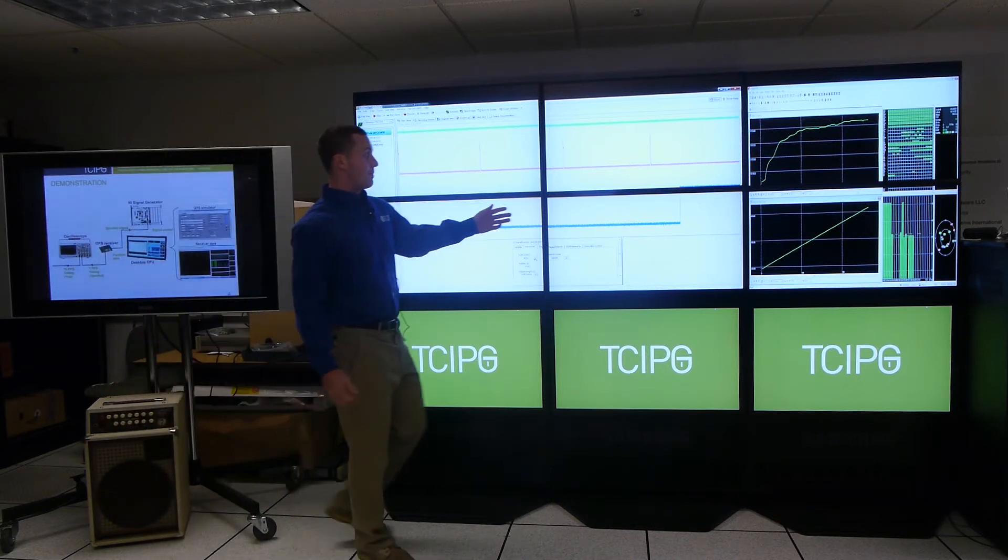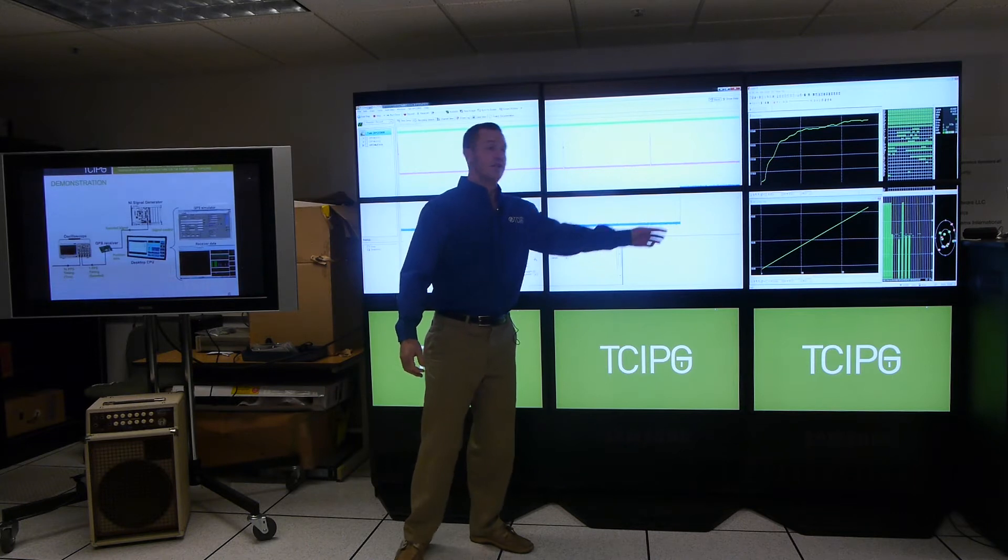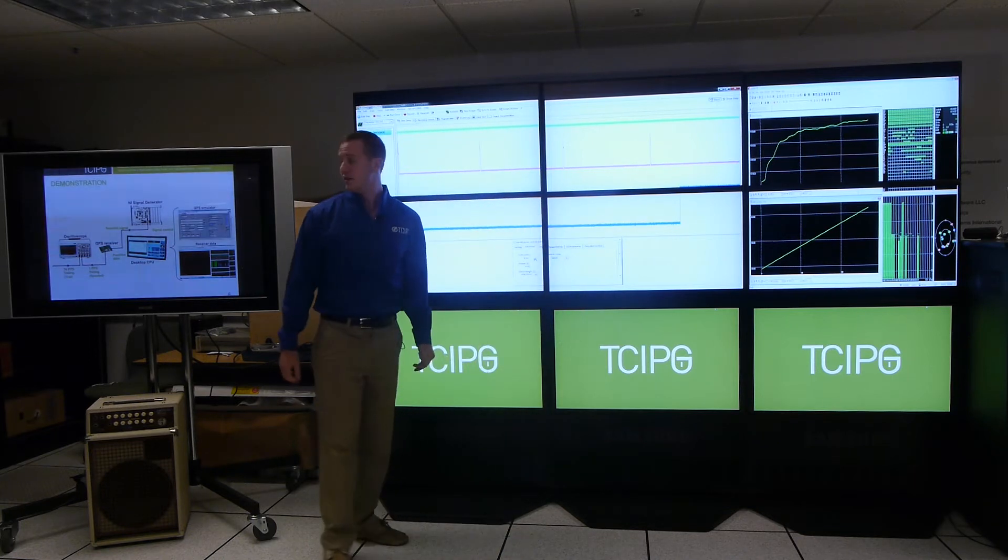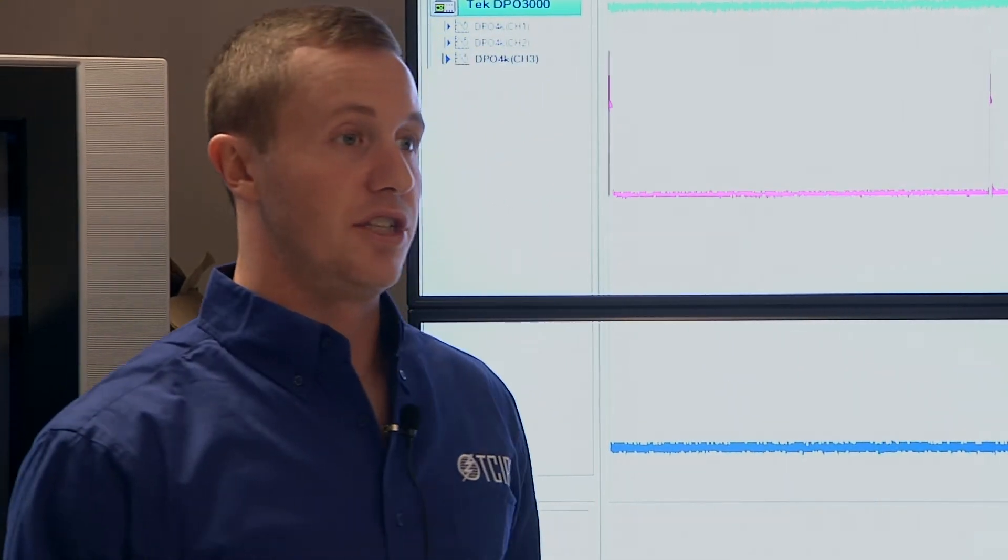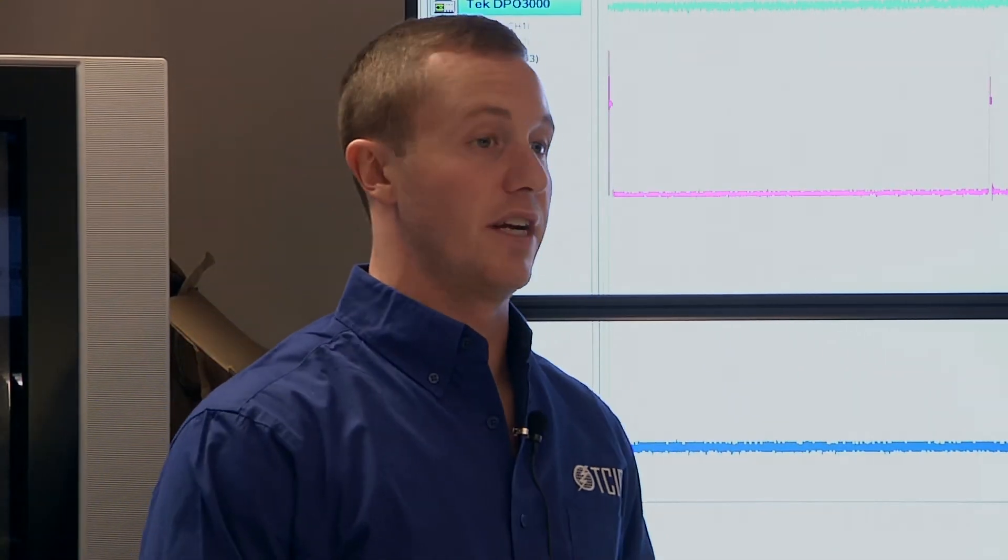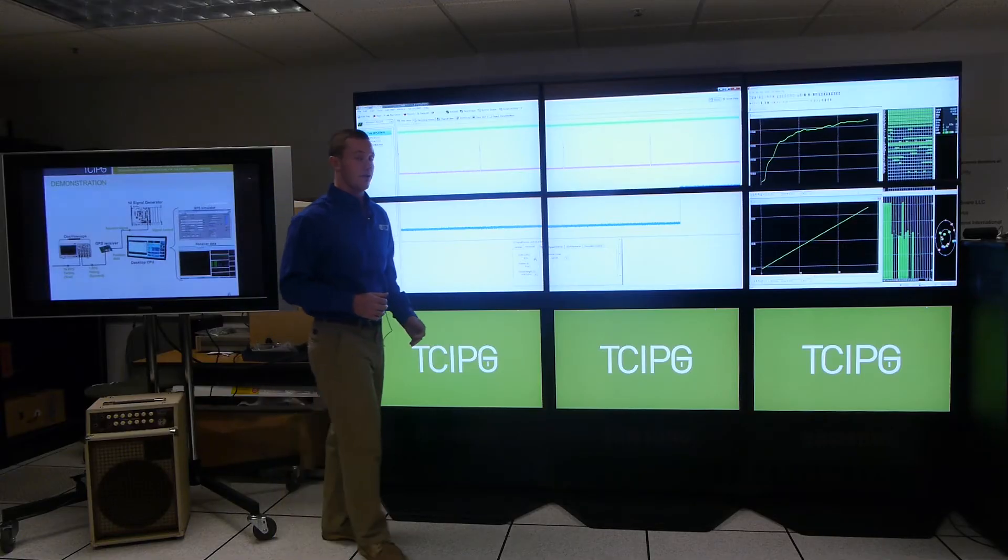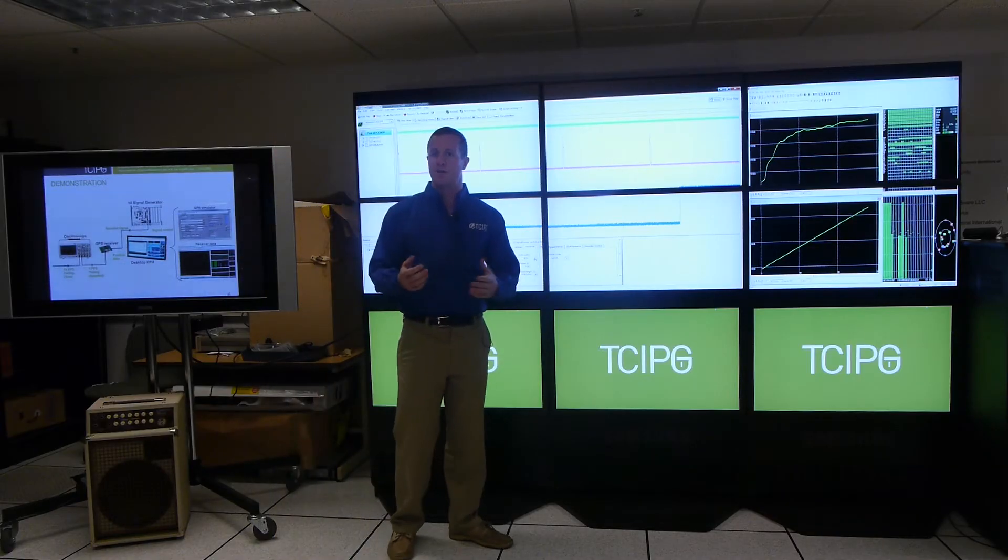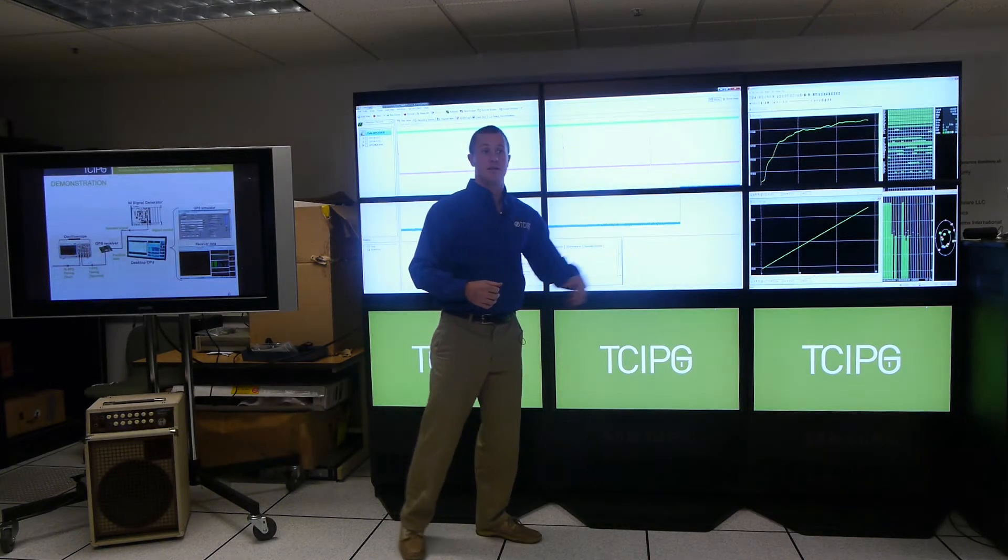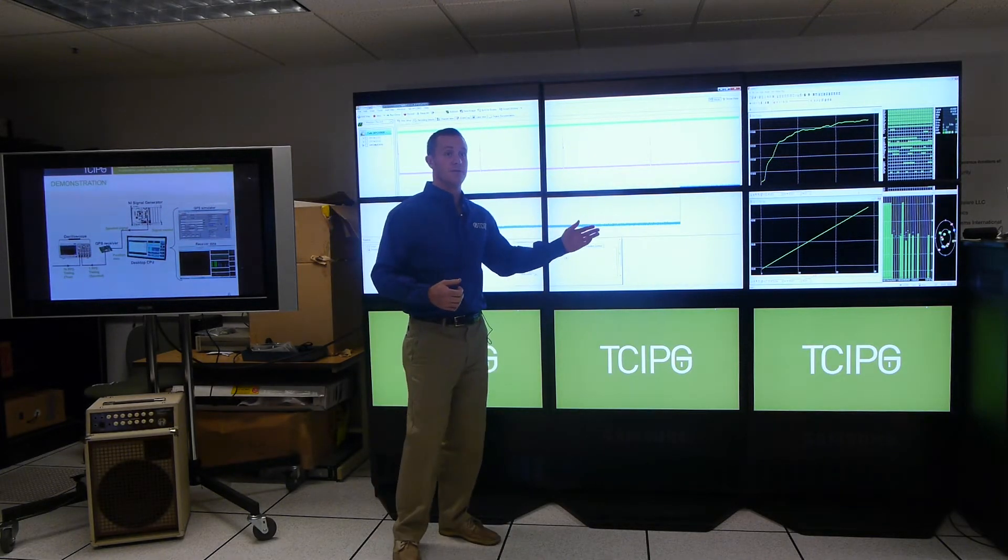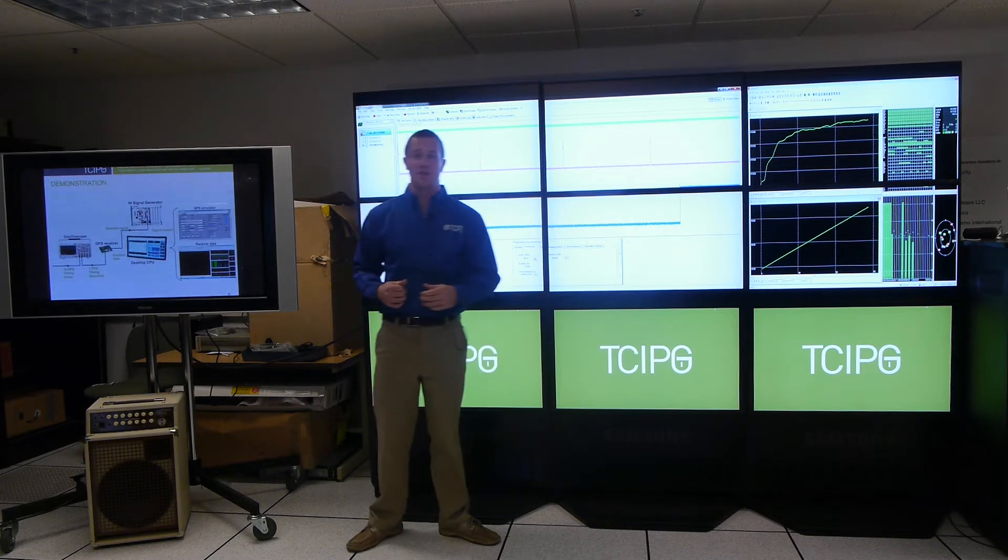On the oscilloscope output, this blue line is representing the receiver pulse per second output and the pink line shows the reference pulse per second from a true GPS receiver. What you'll see is when we inject our false data in the GPS signal, which will happen in about 60 seconds here, you'll see that our pulse per second will shift by 500 microseconds relative to that true GPS signal.